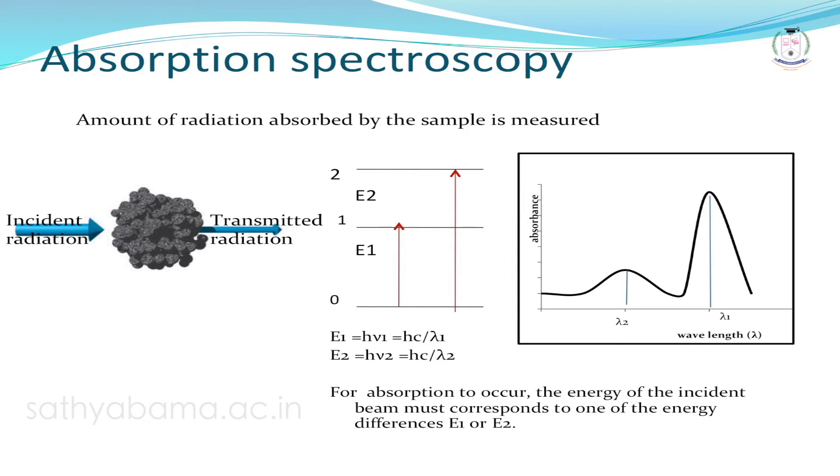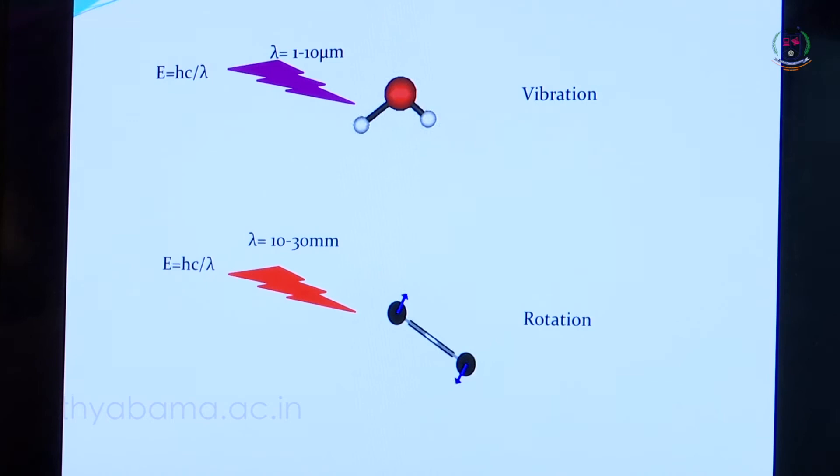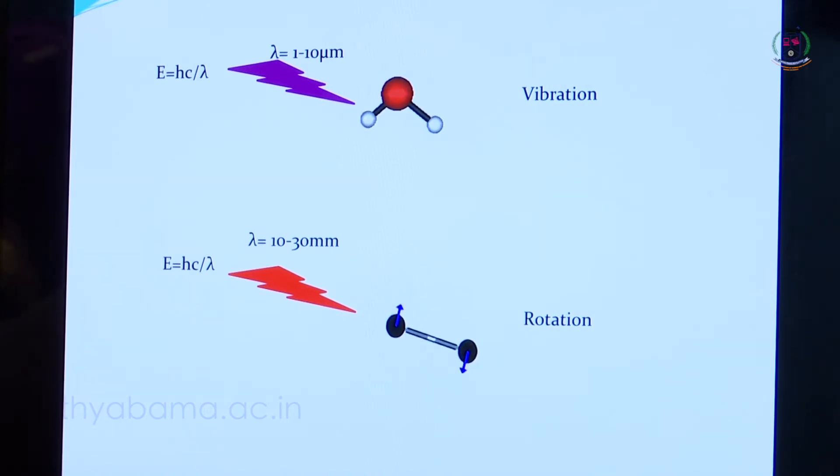In absorption spectroscopy, the absorbed light is measured as a function of wavelength. Absorption spectroscopy is classified based on the energy of radiation observed — as IR spectroscopy, microwave spectroscopy, or UV-visible spectroscopy. If radiation in the wavelength range of 1 to 10 micrometers (IR region) is absorbed, the molecule undergoes changes in its vibrational energy levels, which can be used to establish the molecular structure.